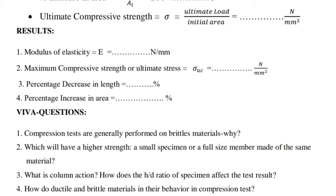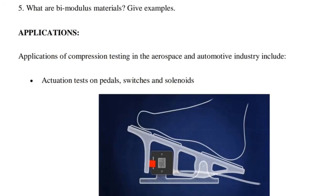Viva questions: 1. Compression tests are generally performed on brittle materials — why? 2. Which will have higher strength: a small specimen or a full-size member made of the same material? 3. What is column action? How does the H/D ratio of the specimen affect the test result? 4. How do ductile and brittle materials differ in their behavior in a compression test? 5. What are bi-modulus materials? Give key examples.